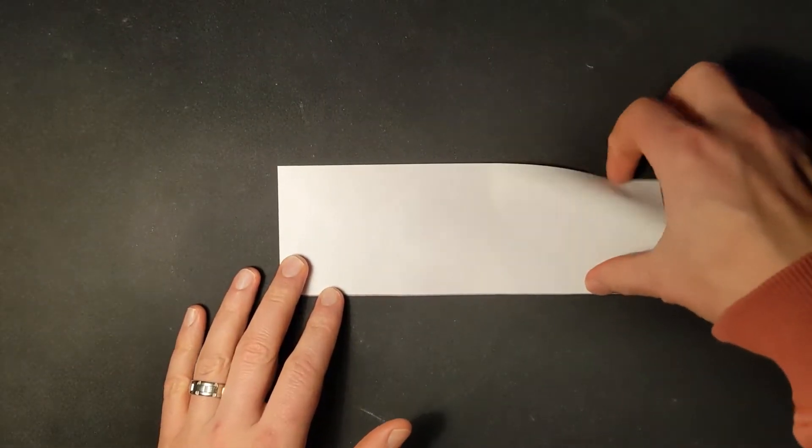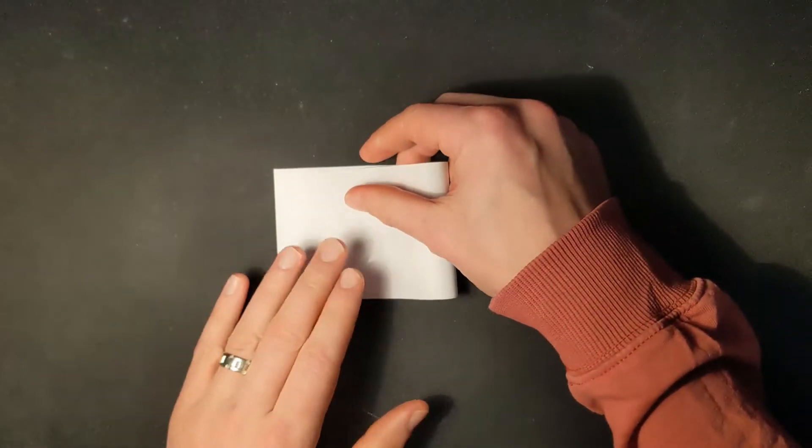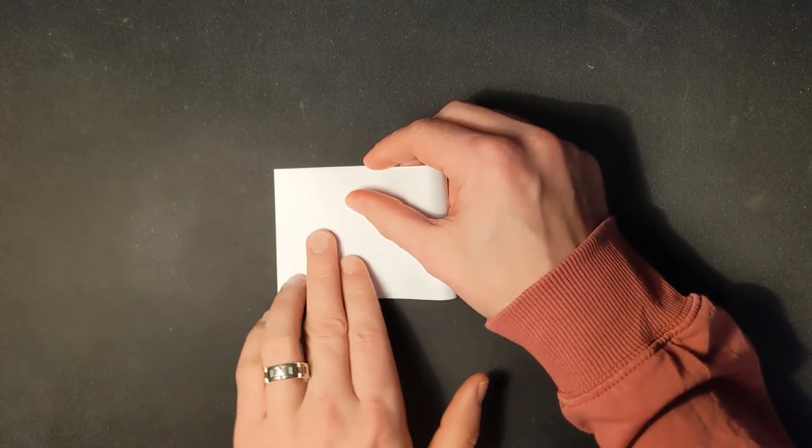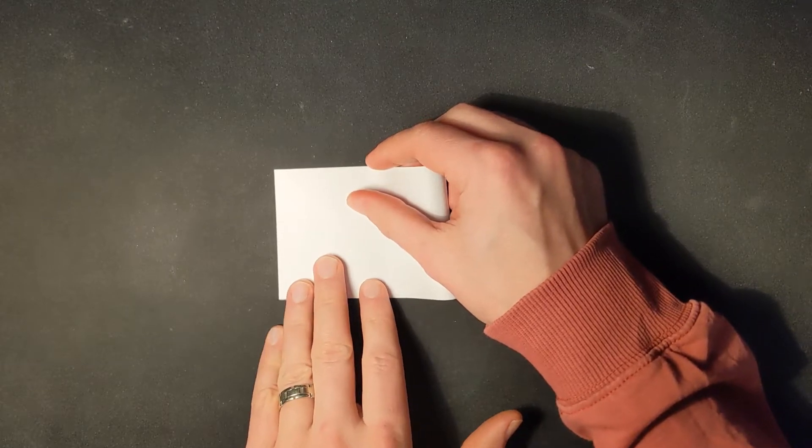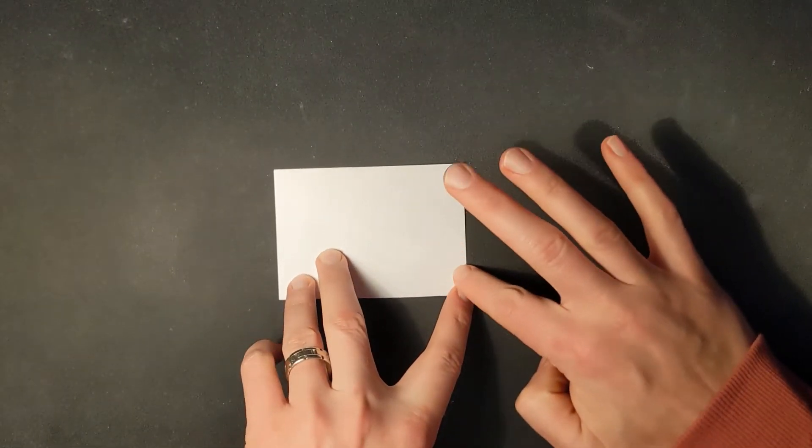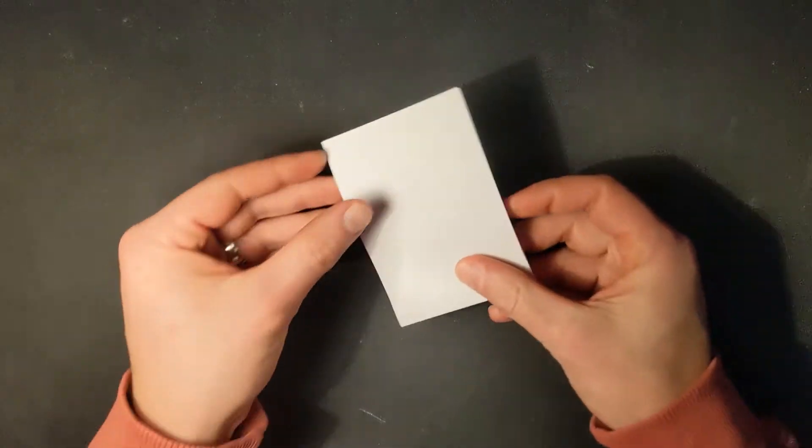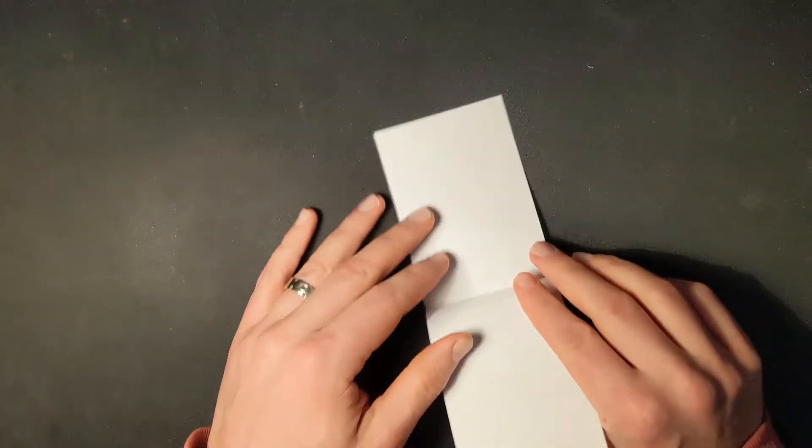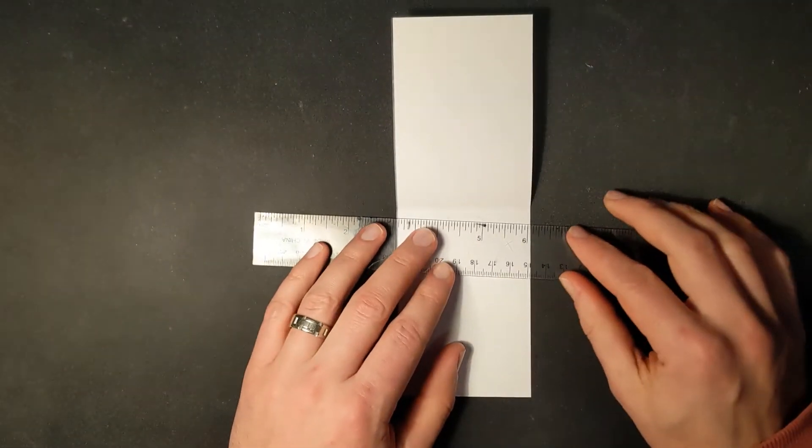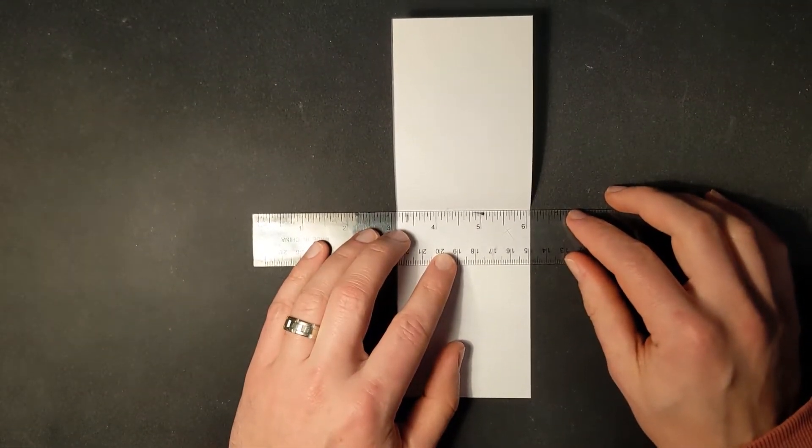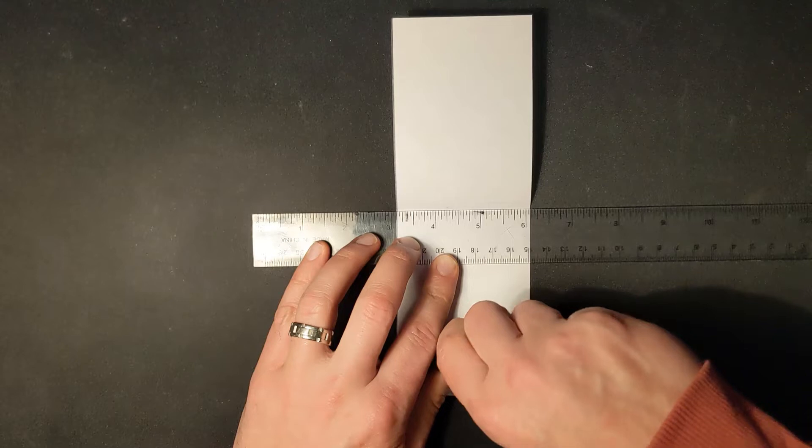Next step we're going to take this and we're going to fold it in half. That is simply to find the halfway point of this paper. We'll make a crease. Now we'll open it up again. I'm going to draw a line where the crease is, just so it's a little bit easier for you to see.